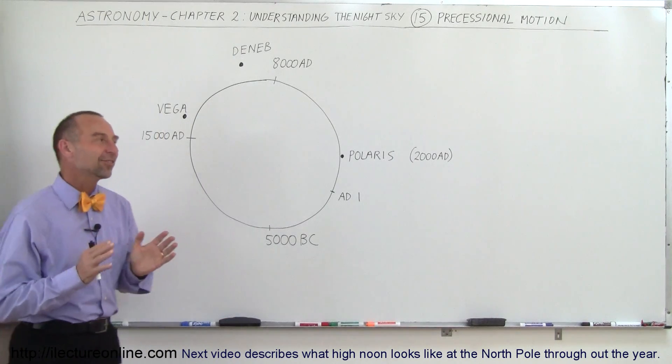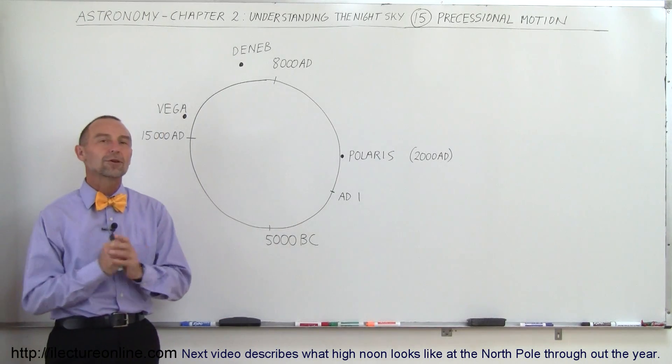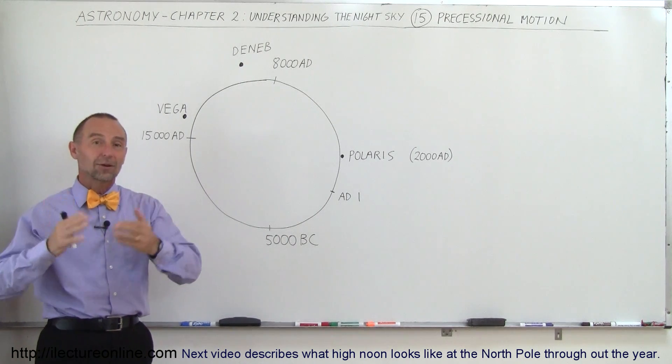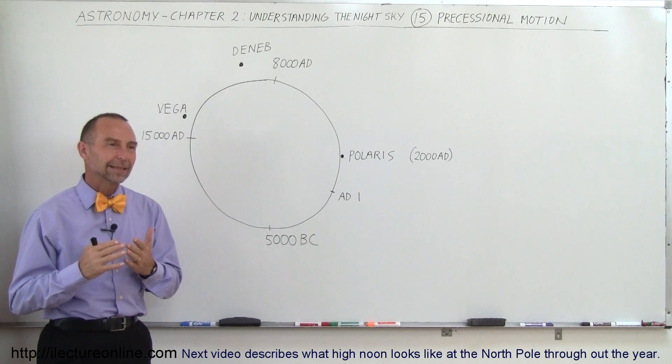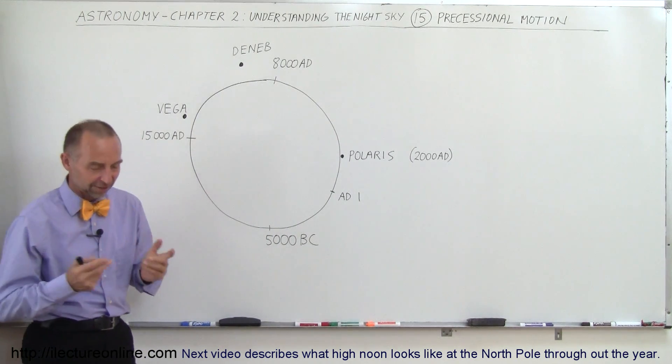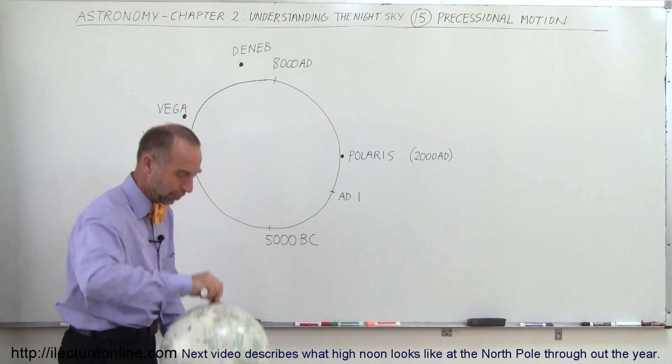Welcome to ElectronLine, and now let's talk about the precessional motion of the Earth. We all think that the North Star, Polaris, is always in the North, but it is not always in the North. The reason is that the Earth actually precesses like a top, and let me explain how that works.